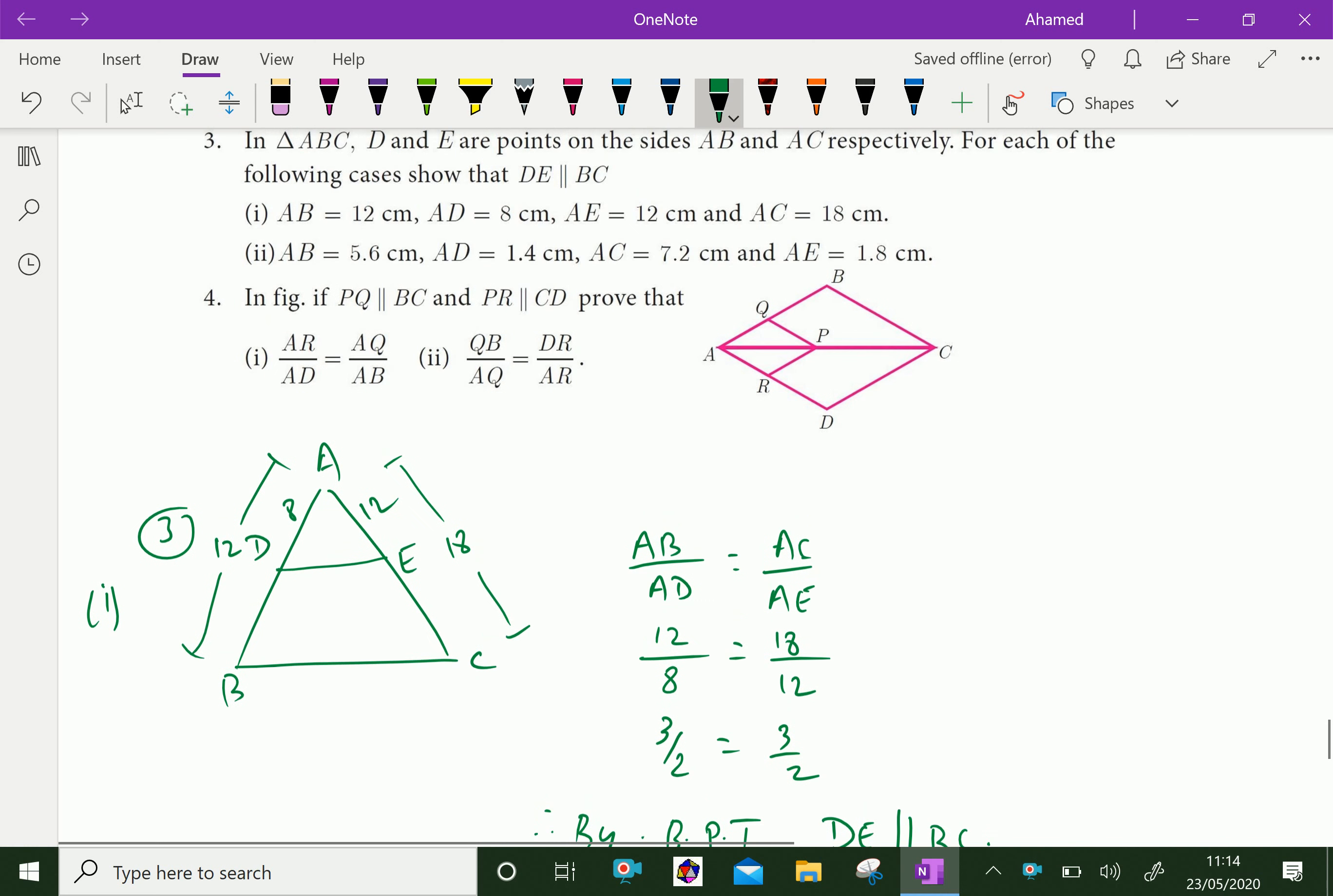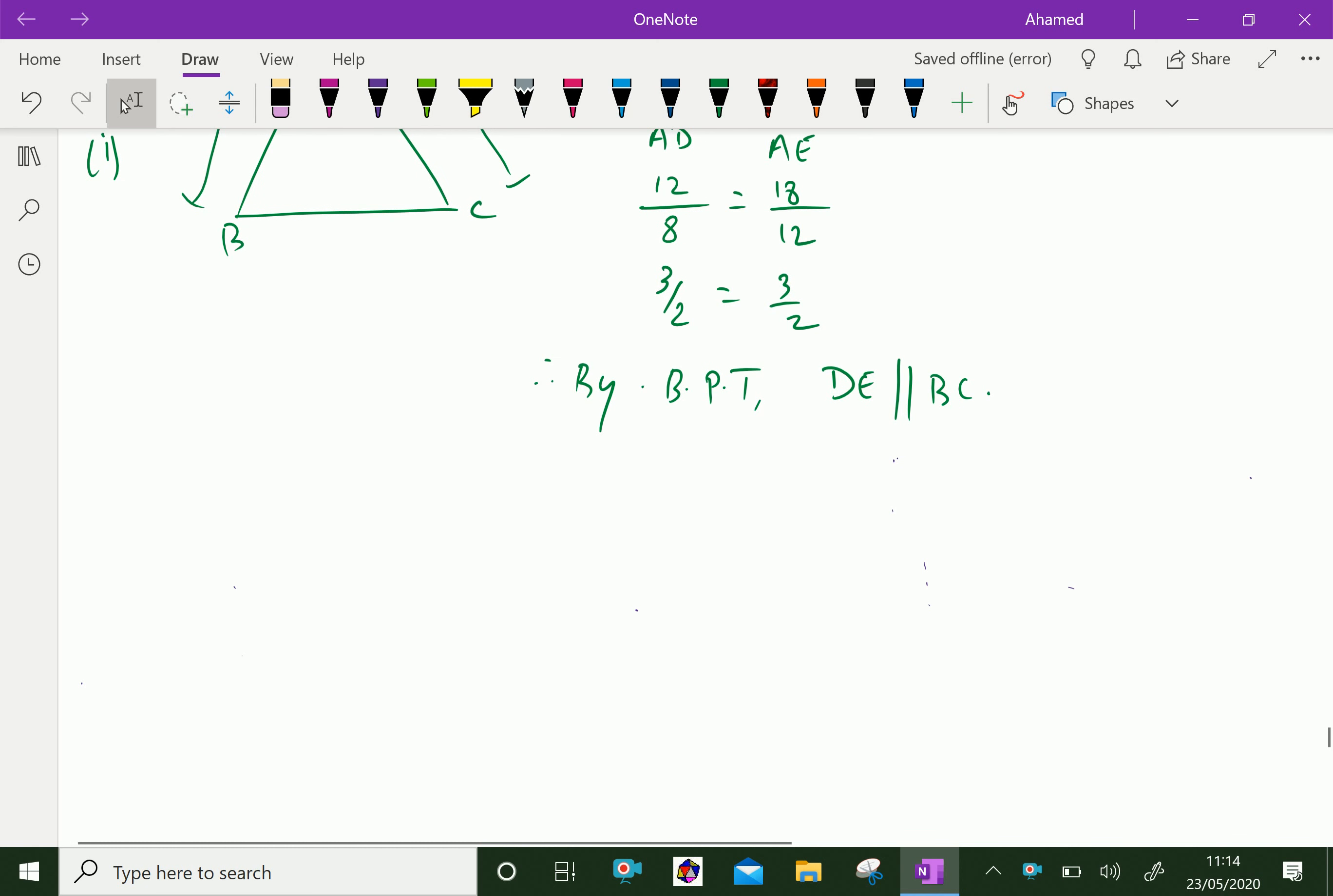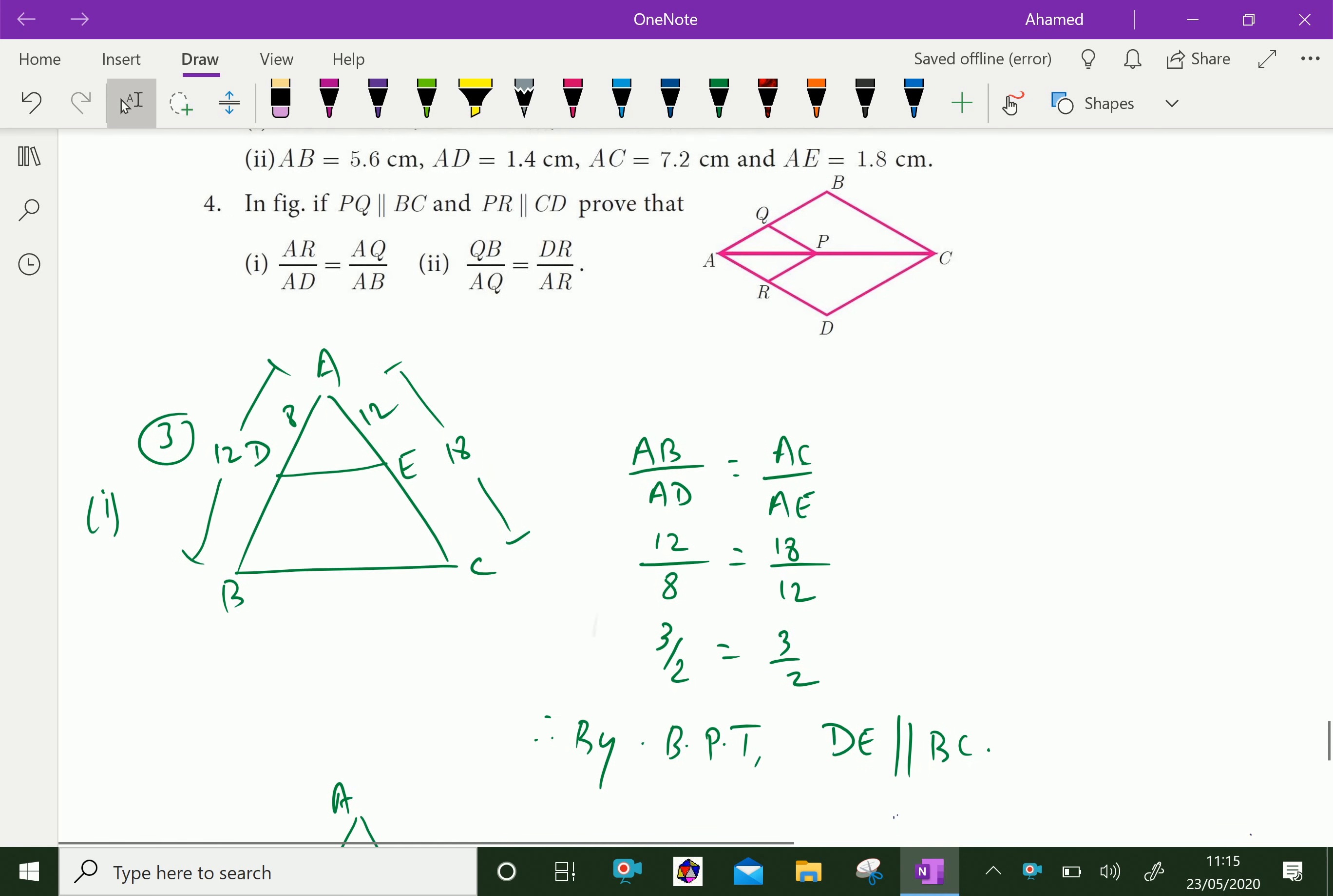Then second part is AB is 5 point. We will write there. We will draw one more triangle. A, B, C, D is any point on sides AB and BC respectively. Then we can get it. AB is 5.6, AD is 1.4.